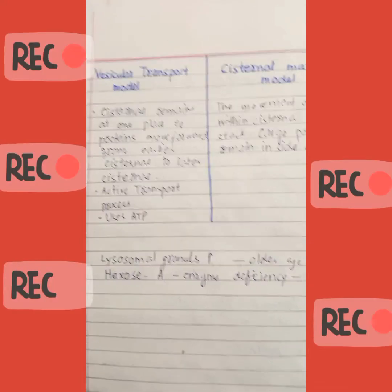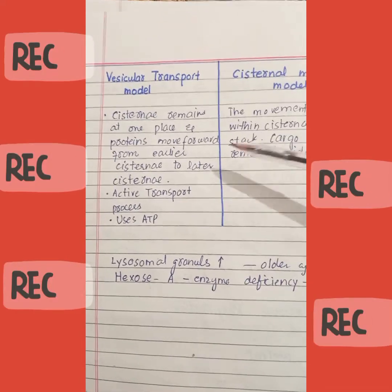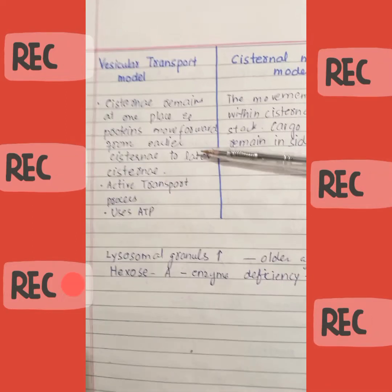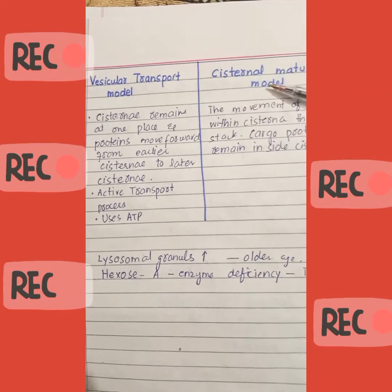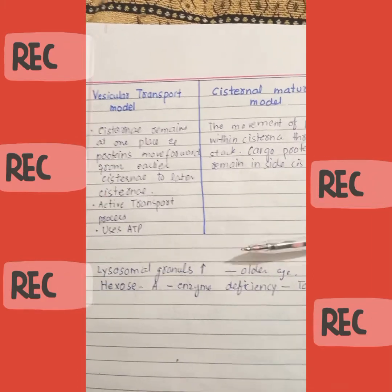Today we will discuss two models of the Golgi apparatus. The first one is the vesicular transport model and the second one is the cisternal maturation model. These are super easy.